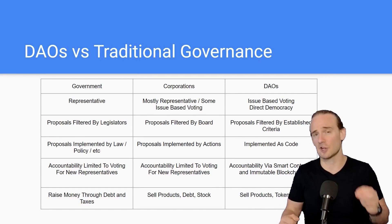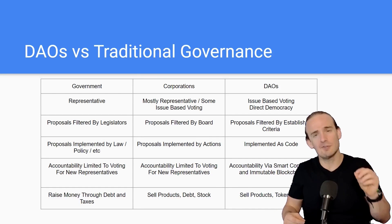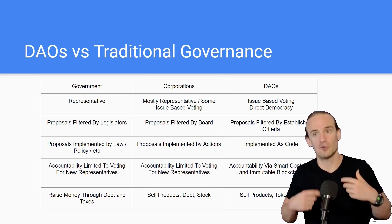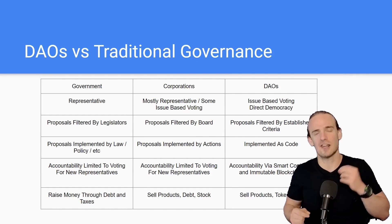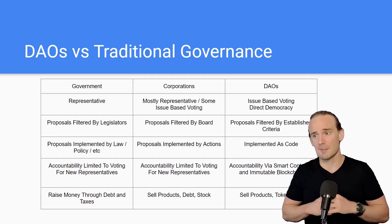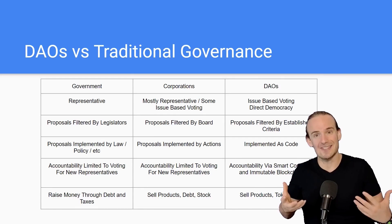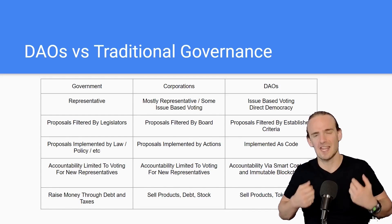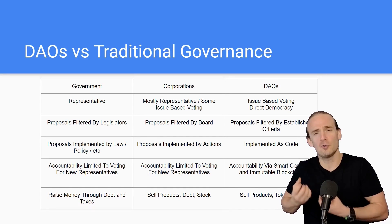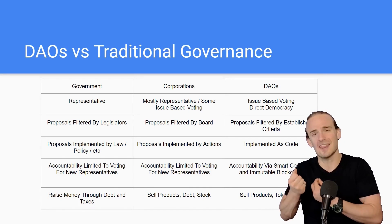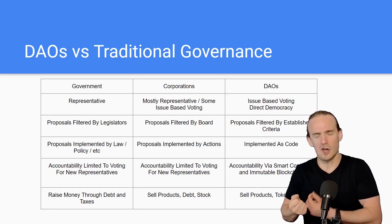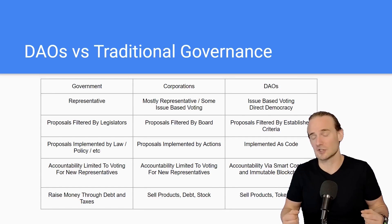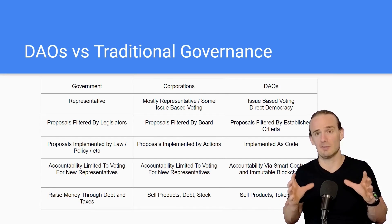By contrast, with a decentralized autonomous organization we can actually vote. Every single person that owns at least a token in the organization can vote on proposals. Not only that, but they can propose their own changes to the DAO. It's a very direct form of democracy in which every individual can actually propose changes to the laws that govern that organization. And because everything is on the blockchain, everything is transparent and there's accountability.